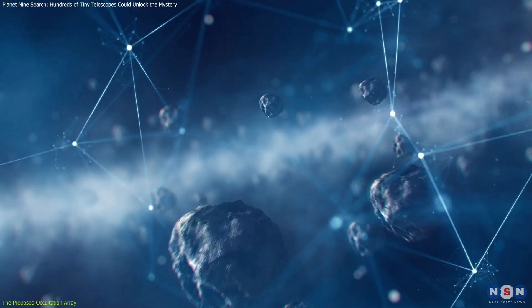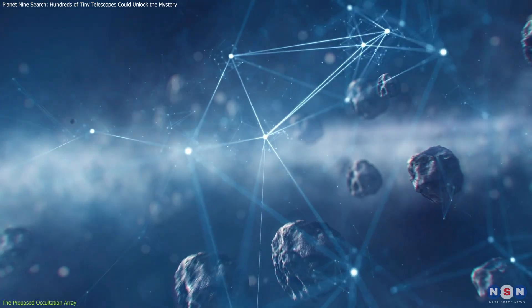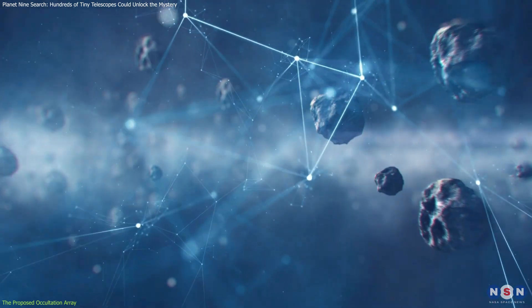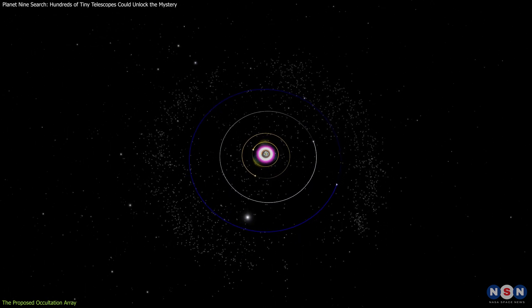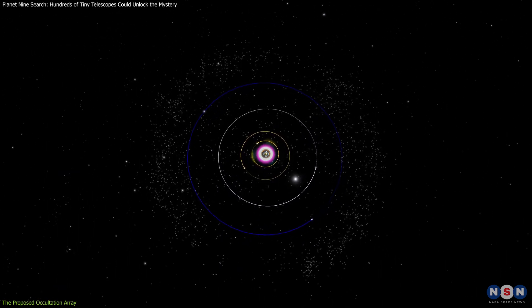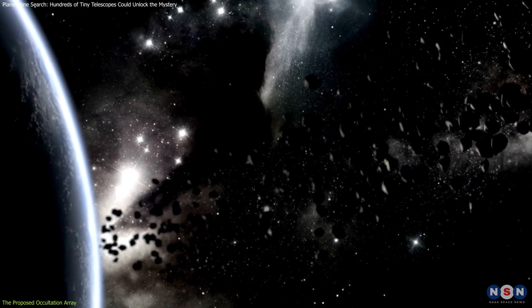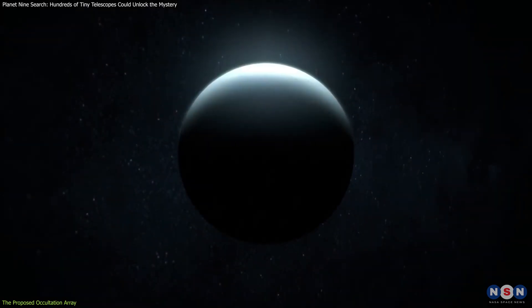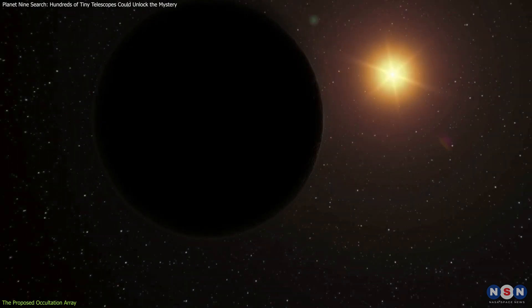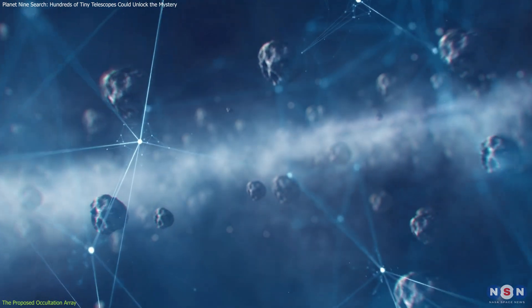Over a decade-long observation period, this array is expected to identify approximately 1,800 new TNOs. By analyzing their orbits, scientists could uncover patterns or anomalies indicative of the gravitational influence of a massive, unseen planet like Planet 9. Simulations suggest that this method could confirm the presence of a five-Earth mass object up to 800 astronomical units from the Sun, making it a powerful tool in the search for Planet 9.